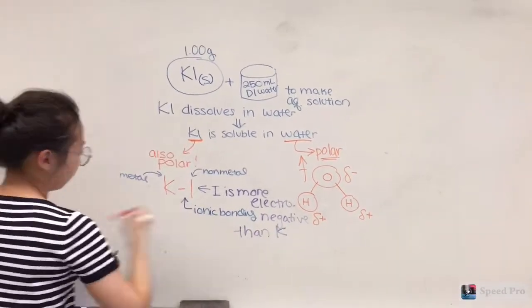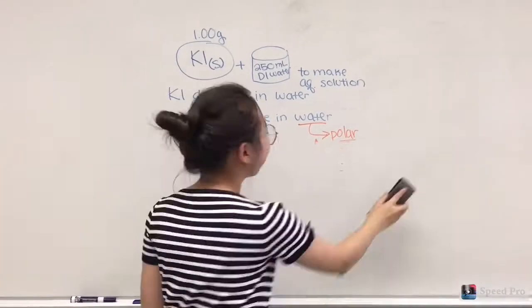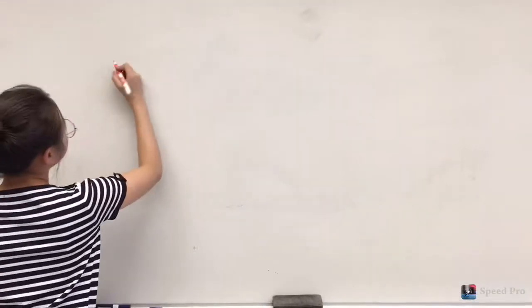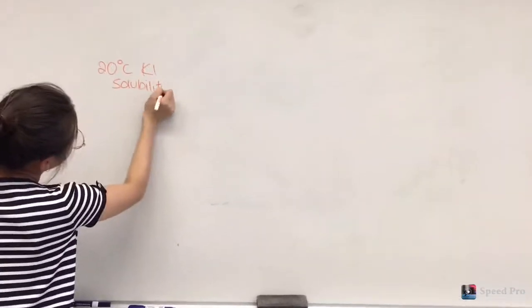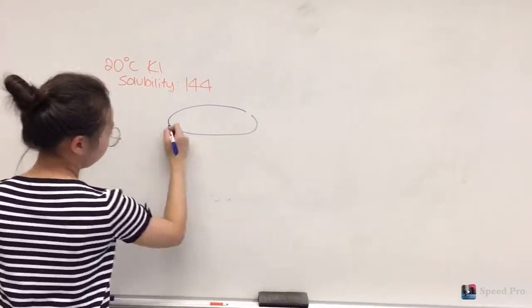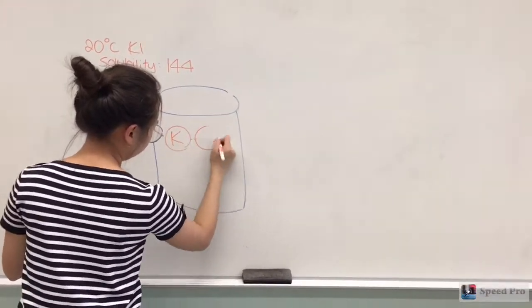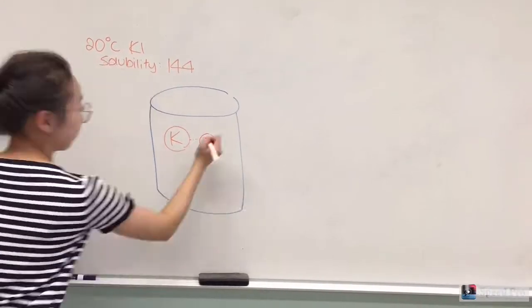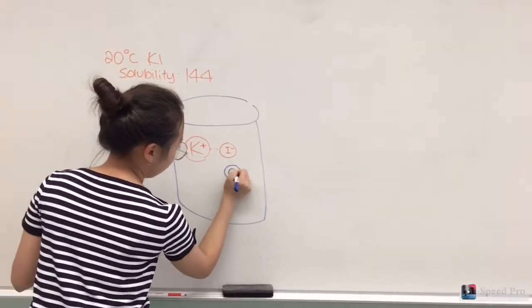The negatively charged oxygen attracts the positively charged potassium atom. Potassium is positively charged because it gave up its sole valence electron to ionically bond with the iodine atom. The positively charged hydrogen atoms on the water molecule attract the negatively charged iodine atoms on the potassium iodide molecules.